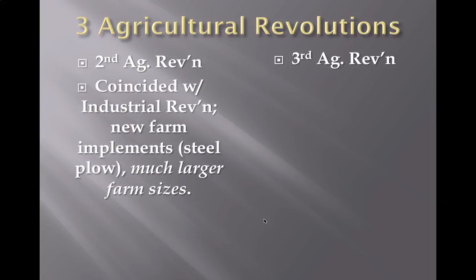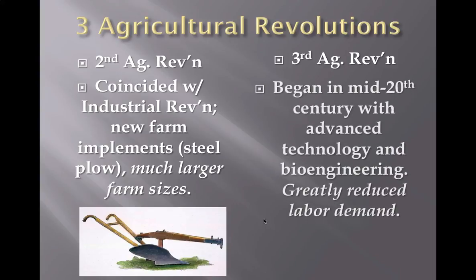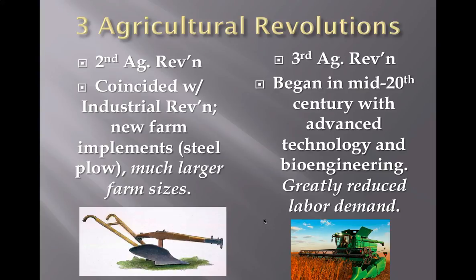There are going to be three agricultural revolutions. The second agricultural revolution coincides with the industrial revolution — this is like stage two of the demographic transition model, where today's developed countries start engaging in new inventions like steel plows, allowing for much faster agricultural practices and larger farm sizes. The third agricultural revolution is in the mid-1900s, the mid-20th century, where crossbreeding of different plants brings higher yields — how much crops you can grow in a certain area. Bioengineering greatly reduces labor demand. Another name for this third revolution is the Green Revolution, taking place mainly in developed countries.